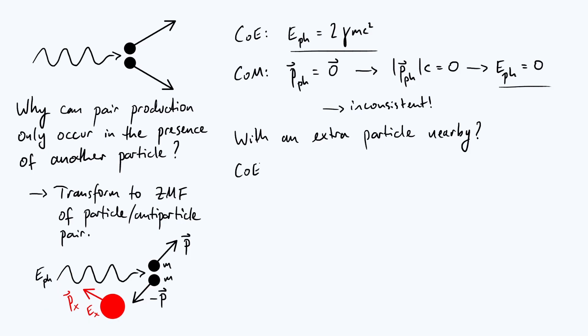So conservation of energy, the equation is going to be pretty similar, just with one extra term on each side. So initially you've got the photon energy, but you also have the initial energy of particle x, so let's call that e_xi, initial energy of x. Afterwards, after the pair production has happened, you've still got your two gamma mc squared, the energy of the particle-antiparticle pair.